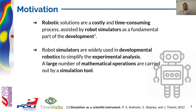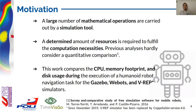Implementing a robotic solution is a costly and time-consuming process, where a robot simulator at least evaluates the simulation behavior performance under a controlled environment, avoiding accidents. In development robotics, robot simulators are widely used to simplify the experimental analysis. There are many simulation tools for different kinds of robots, and a large number of mathematical computations must be reproduced to replicate real-world aspects. A simulation requires a determined amount of resources, and even a higher amount for a humanoid robot, given the number of joints that must be operated.